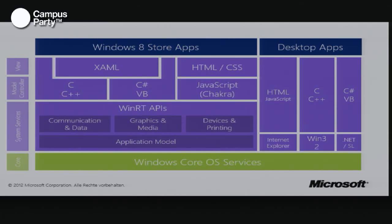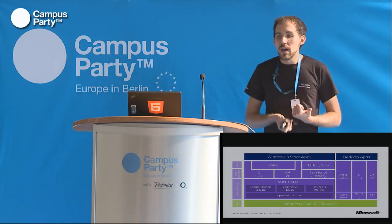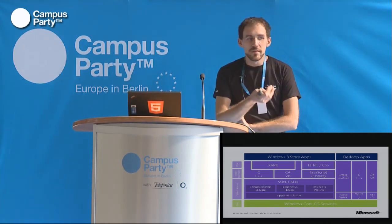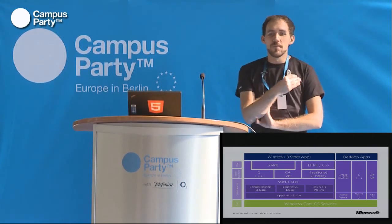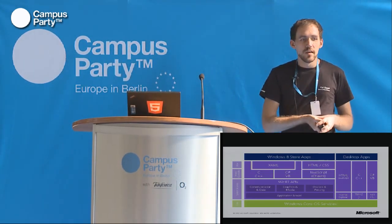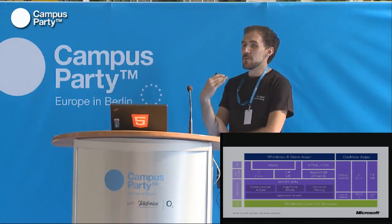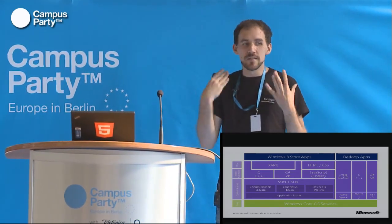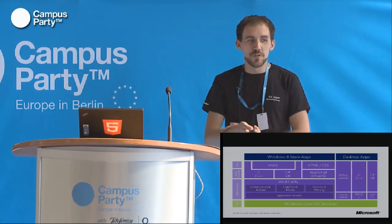WinRT is significant because it's a newly designed Windows API that supports a unified interface for three different programming languages: native C and C++, C# and Visual Basic, and HTML5 and JavaScript. JavaScript is now a first-class language in the Windows 8 ecosystem — you can write native applications for Windows 8 in JavaScript. This is not PhoneGap, this is not some kind of framework; it is actually built into the operating system, and these applications feel and behave as if they were native applications.